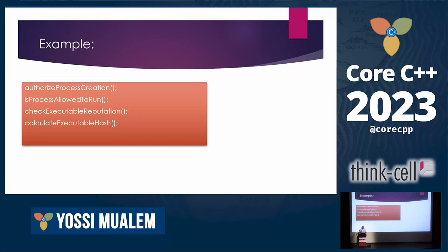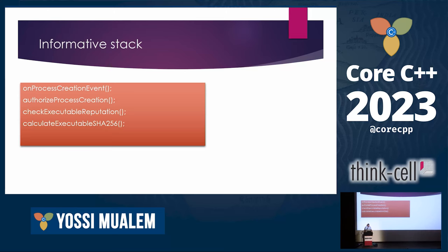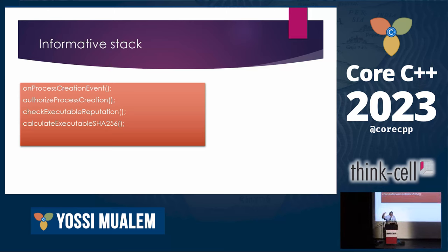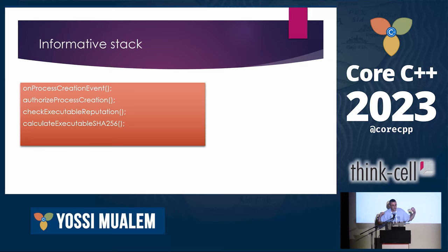If you look at a stack like: authorize process creation, is process allowed to run, check executable reputation, calculate executable hash — they're all good names, but they all answer 'what,' so you can't see the whole picture. But if instead you have: on_process_creation_evented, authorize process creation, check executable reputation, calculate executable SHA256 — now you know a new process was created, you got an event, you're authorizing if it can run, one check is its reputation, and you check reputation by calculating its SHA256. Different functions at different altitudes answer different questions, giving you the whole story.